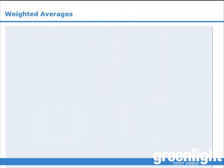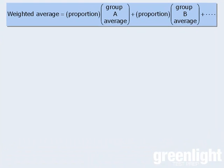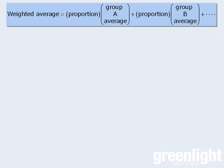We can now generalize these results. If we are combining two or more groups where we know the average of each individual group, then to find the weighted average of the combined population, we take the proportional representation of one group — say group A — and multiply it by the average of that group. Then we do the same for another group, and so on.